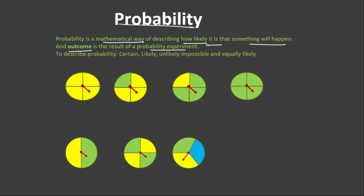In probability, the words we use to describe it are certain, likely, unlikely, impossible, and equally likely. We mostly use spinners, dice, and also coins in probability experiments.